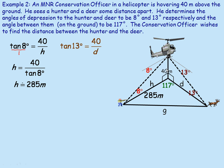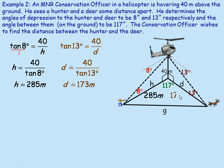For the deer's side, the angle is 13°, so tan 13° = 40 / D, giving D = 40 / tan 13° ≈ 173 meters. We write that in the diagram so now we have both sides H and D.